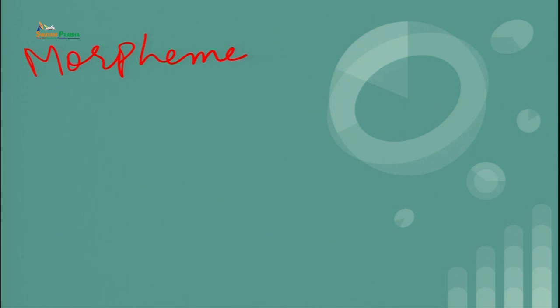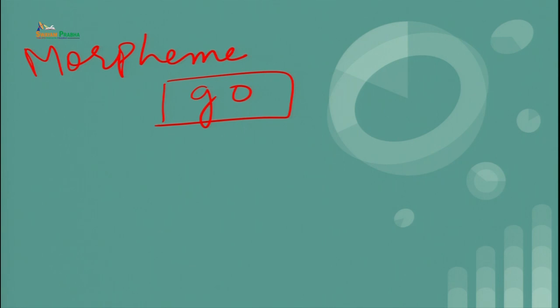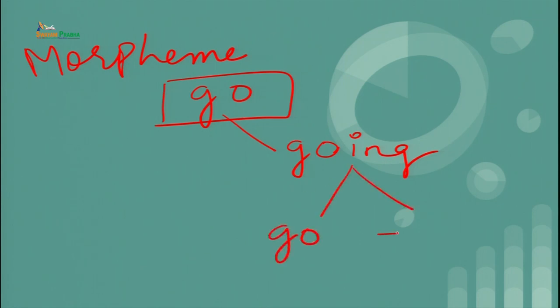Dear learners, morphemes are generally short sequences of phonemes and they may or may not be grammatical. Some linguists argue that they are the smallest meaningful units; some may play a grammatical function. Let us take the example of 'go'. You can use this word as it is and you cannot further divide it, because if you decompose it, the resulting entities are not going to be meaningful. If you add something to it, you can do it in many ways. For example, you can say 'going', which you can decompose into 'go' plus 'ing'.